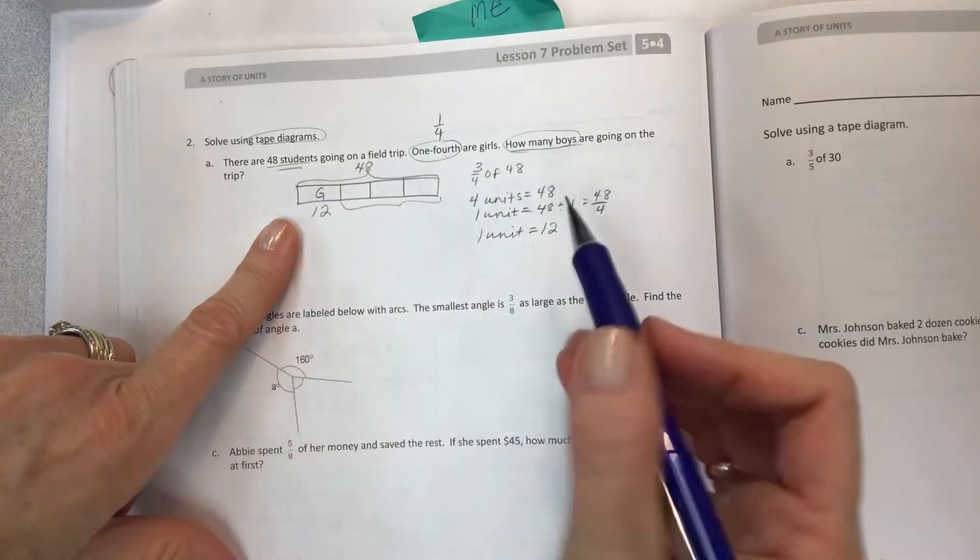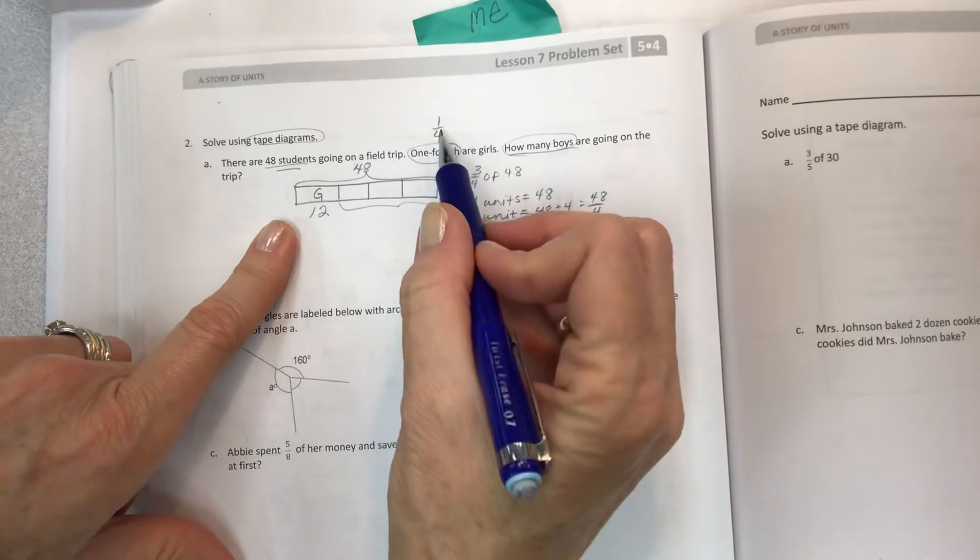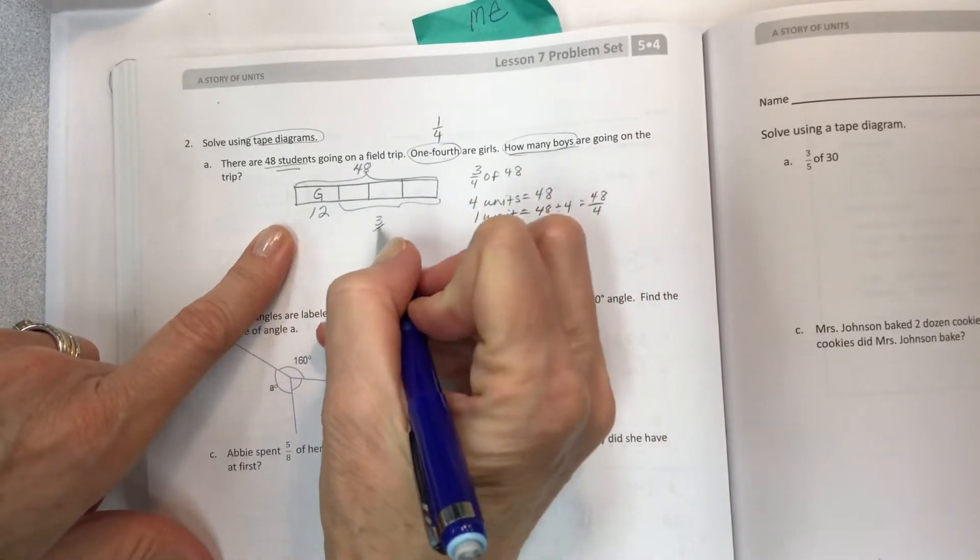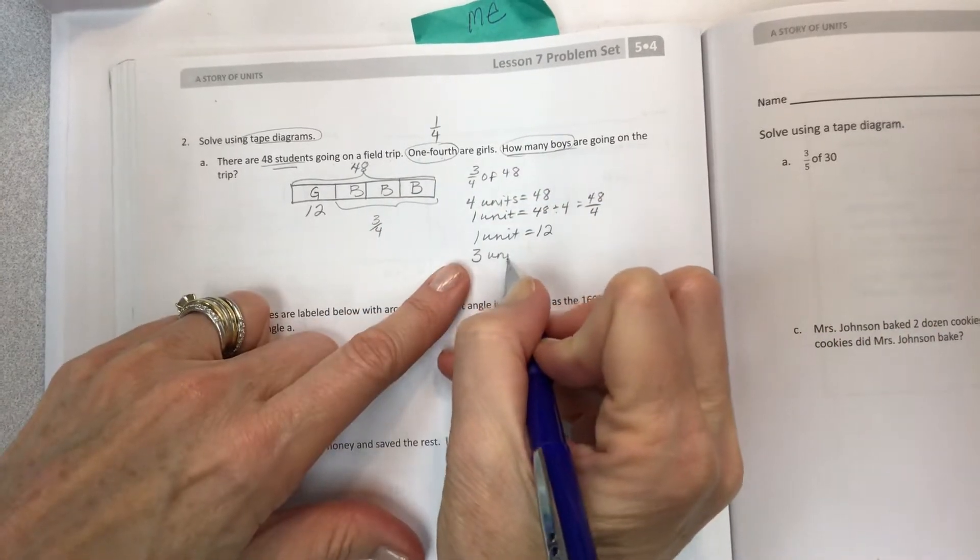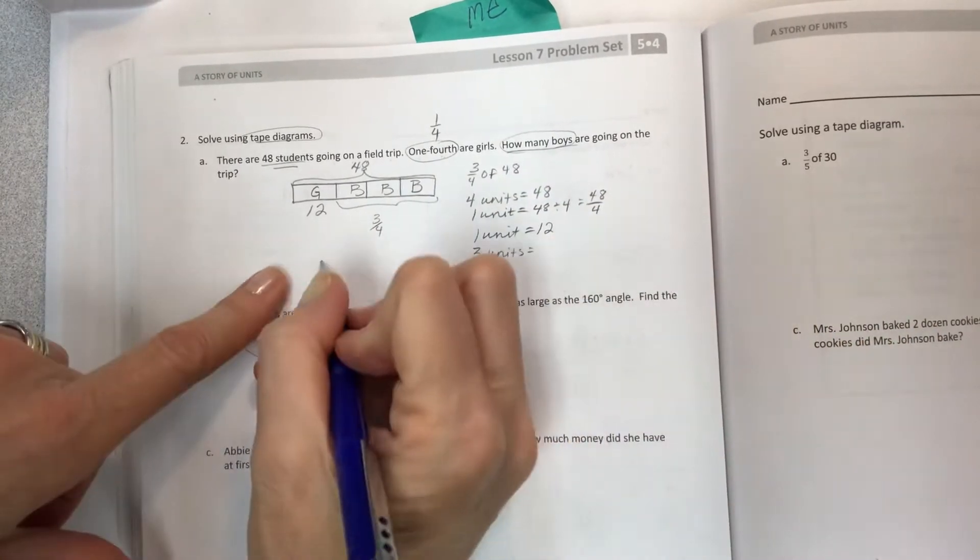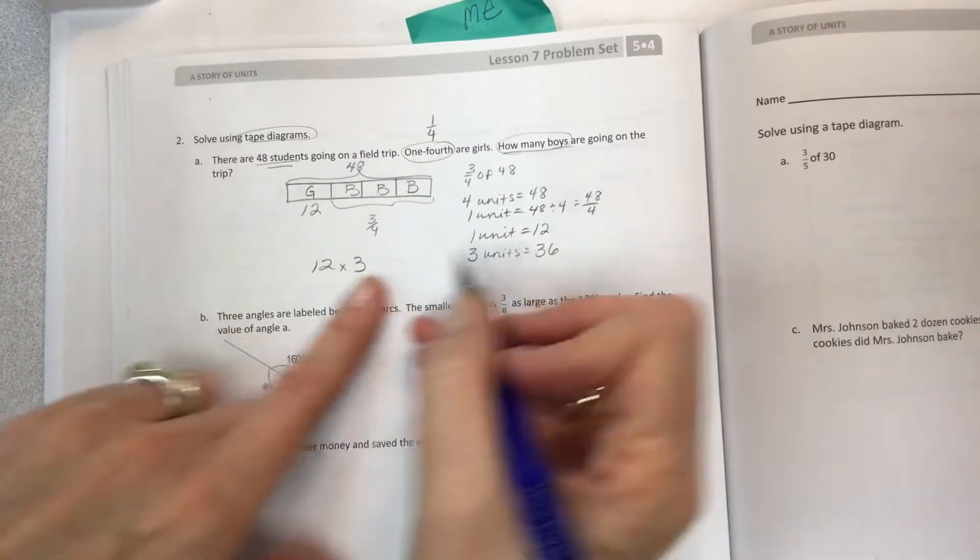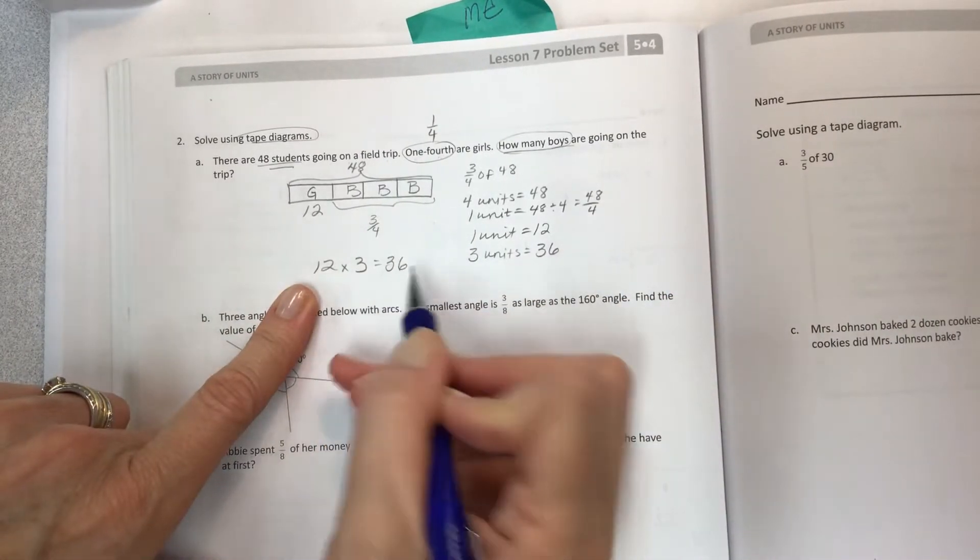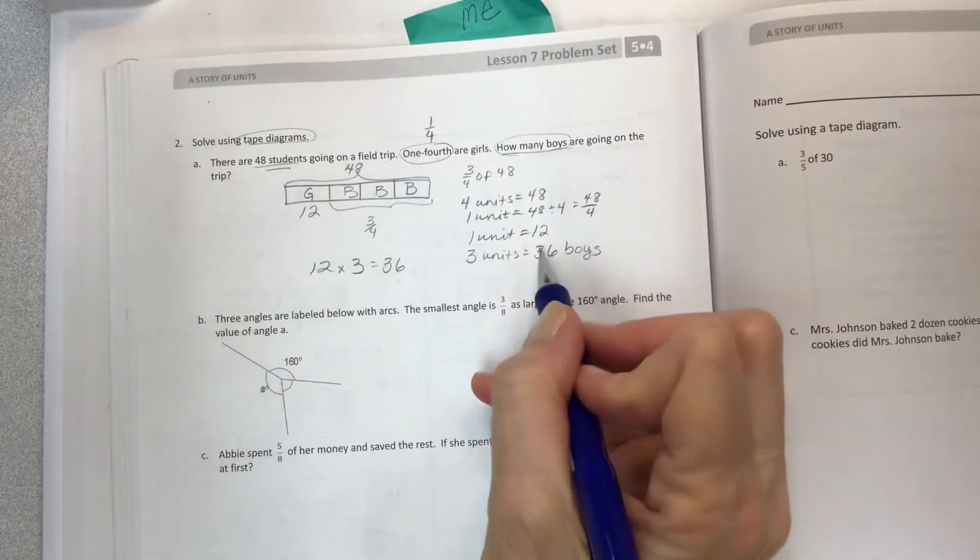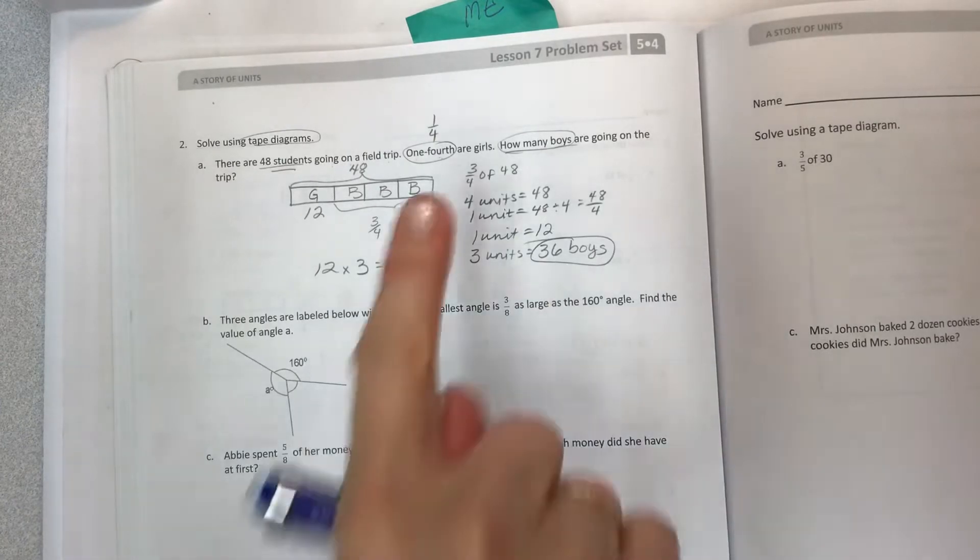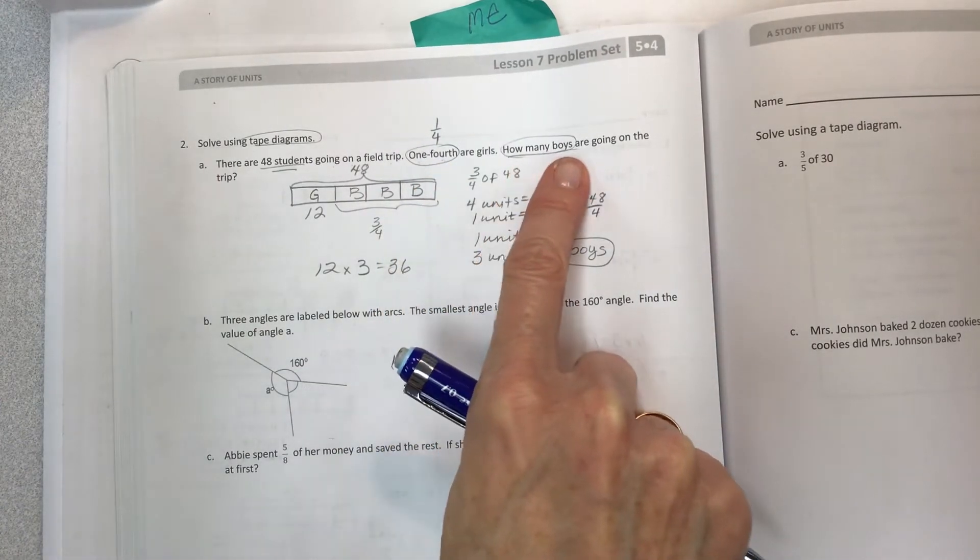One unit is 12. I don't really need to know about the girls. I need to know how many boys. That is the three from the three-fourths of the total. Three units would be 12 times 3 for 36. So 36 boys are going. Be careful with what they are giving you versus what they're asking you to find.